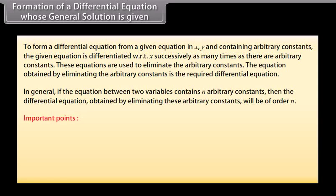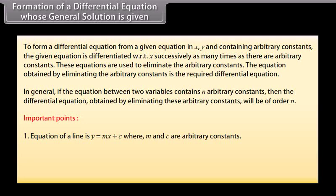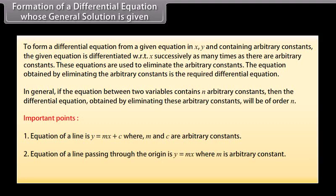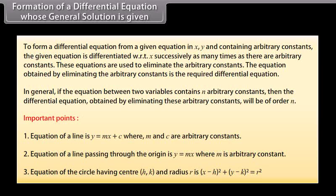Important points: the equation of a line is y = mx + c, where m and c are arbitrary constants. The equation of a line passing through the origin is y = mx, where m is an arbitrary constant. The equation of the circle having center (h, k) and radius r is (x − h)² + (y − k)² = r².